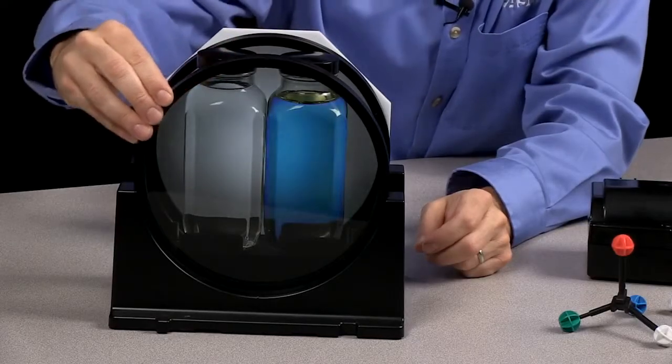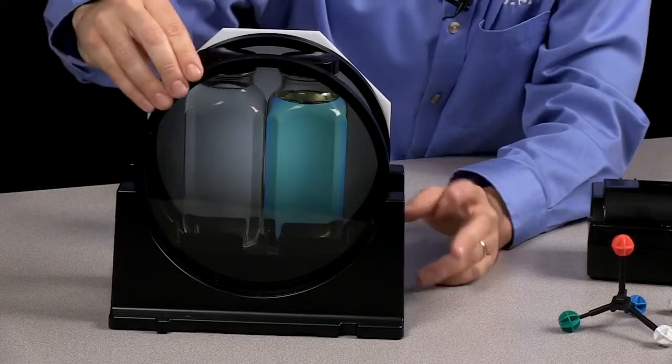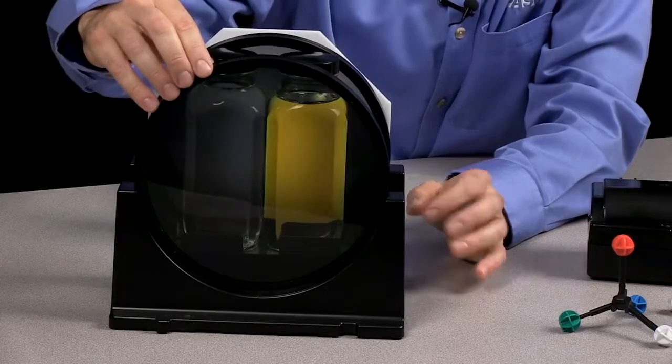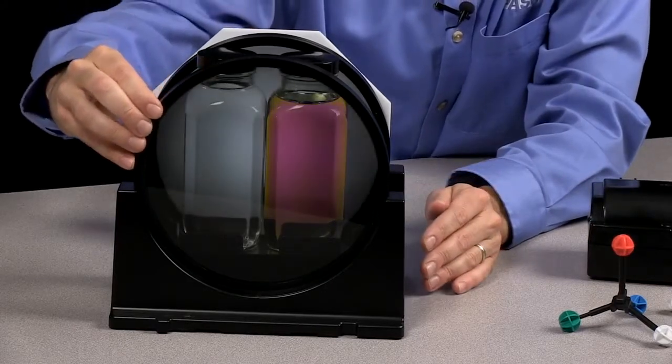So now, as this is getting darker, this is getting brighter, different colors are starting to appear because of the different wavelengths of light that are being blocked or let through by that particular sample.